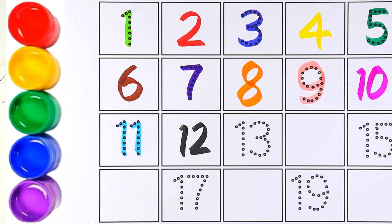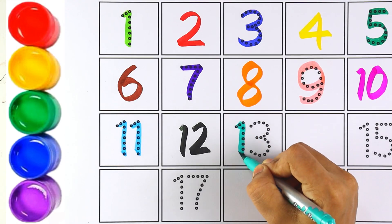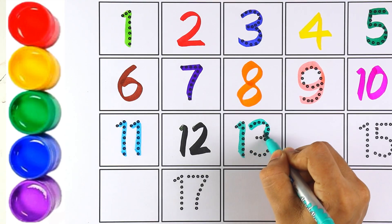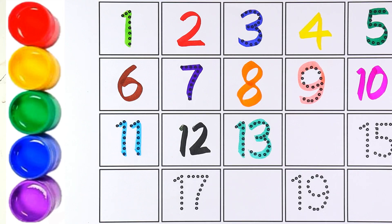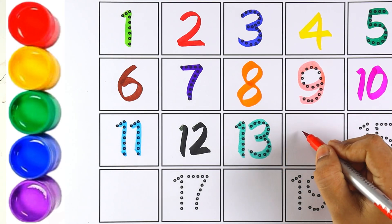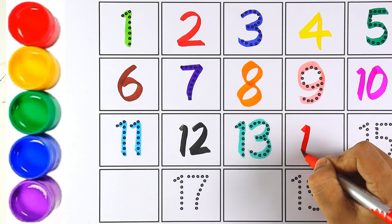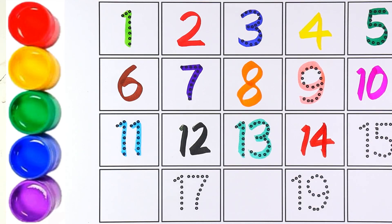Kids, can you guess which number it is? It is 13! Let's write number 13 — one and three makes the number 13. Now I'm using red color once again and I'm writing number 14 — one and four makes the number 14.